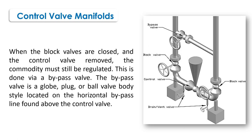When the block valves are closed and the control valve removed, the commodity must still be regulated. This is done via the bypass valve. The bypass valve is a globe-like or ball valve body style located on the horizontal bypass line, found above the control valve.